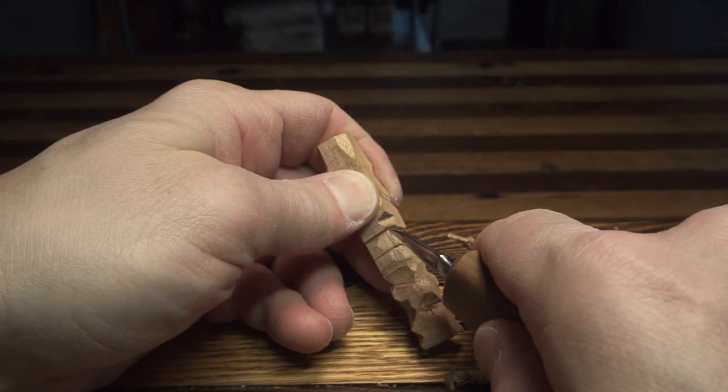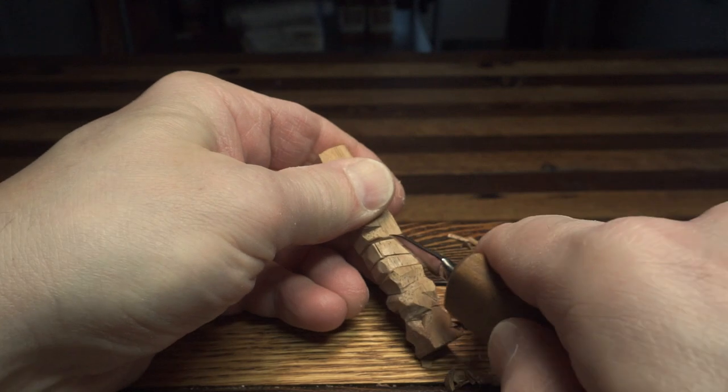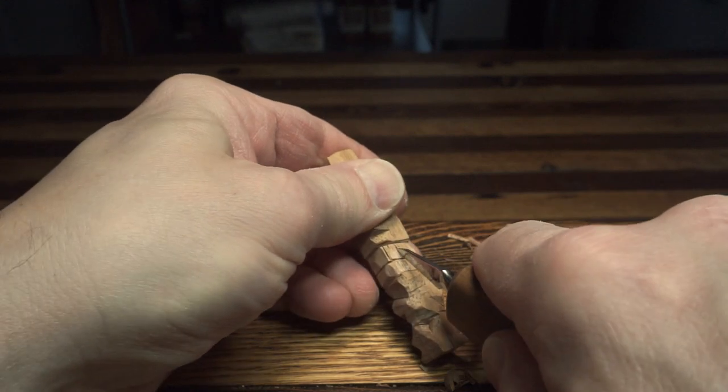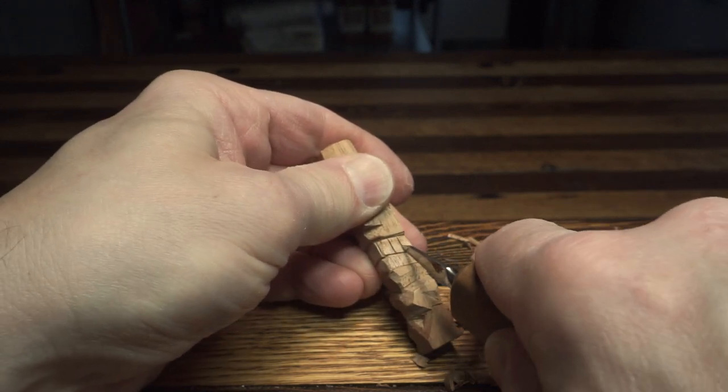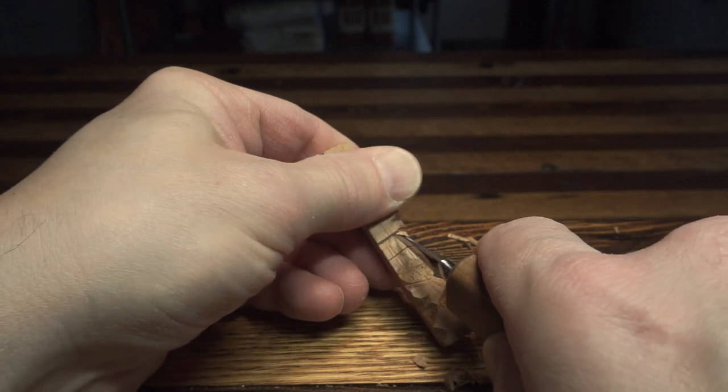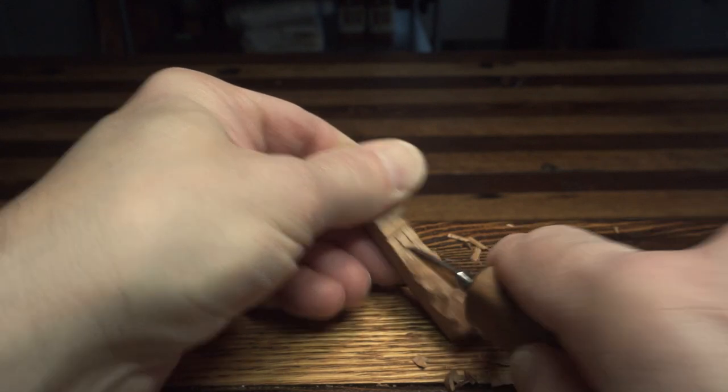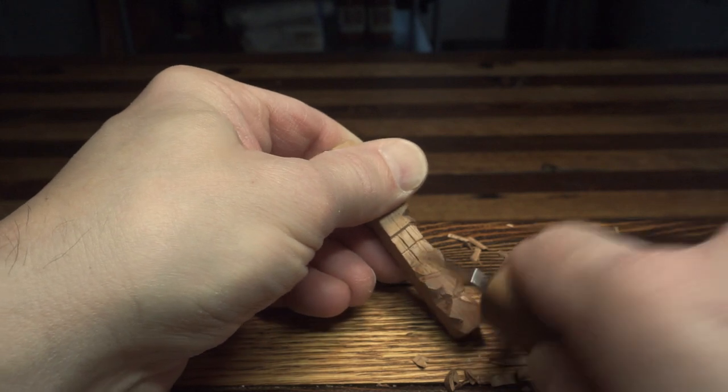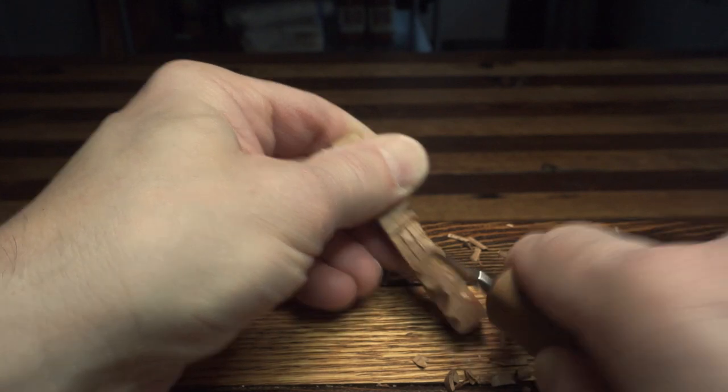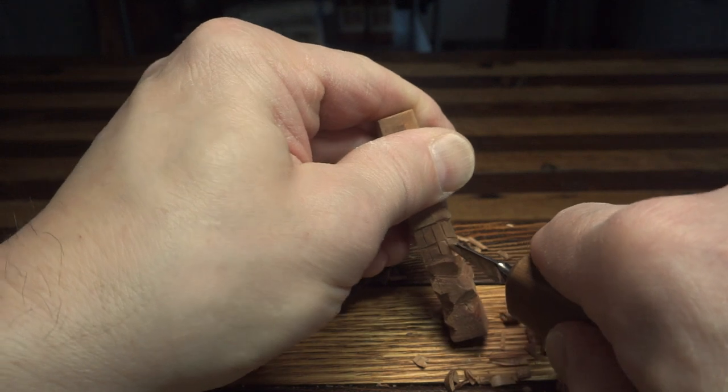Here we'll separate the teeth, just straight cuts right down. Then we'll come back and divide them out a little bit. I'll take off a little wood when I'm done here to round the teeth out just a bit. Again just straight cuts in.